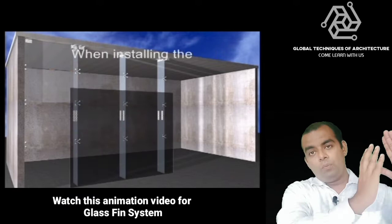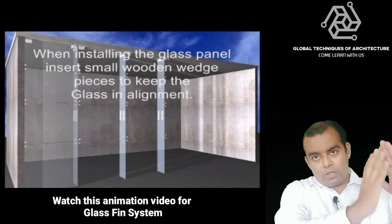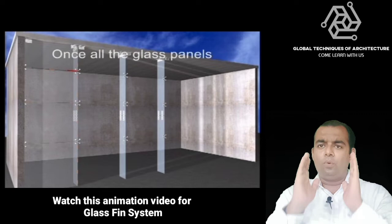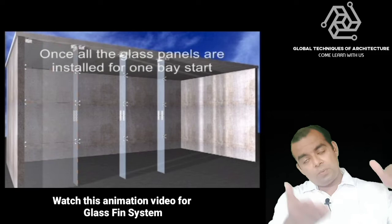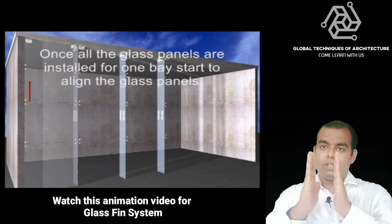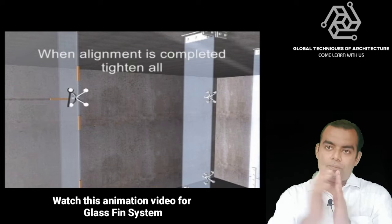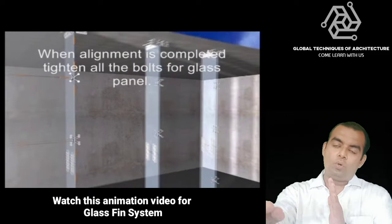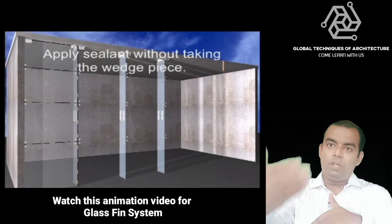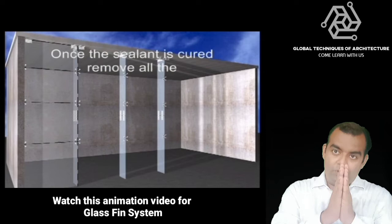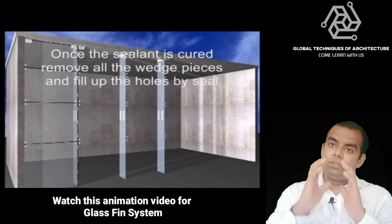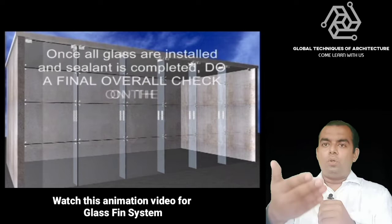We start from the glass fin system, going right up to the cable net system. The glass fin system is the easiest to understand — instead of a mullion and transom, laminated glass fins are used. As mentioned in previous videos, those laminated glass fins have to be heat soaked. Heat soaking gives them more structural value, and since the laminated fin plays the role of a structural member, it needs to be verified by a structural engineer.